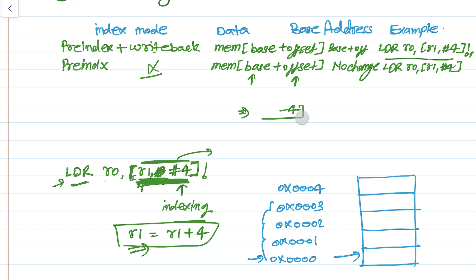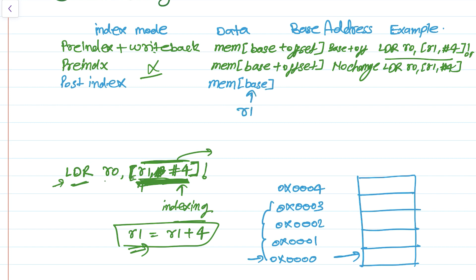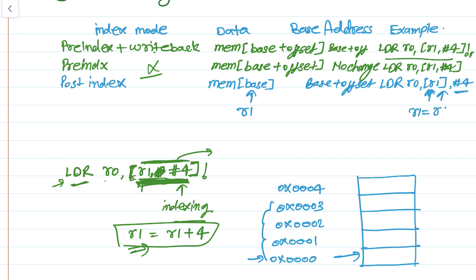Finally, we have post-indexing. In post-indexing, the data is loaded from the memory address pointed by the base register R1 with no offset, but the base address changes after the memory load. The base becomes base plus offset after loading. An example is: LDR R0, [R1], #4 — when the offset value is outside the square brackets, it indicates post-indexing. The CPU first loads data from the address pointed by R1, and after that automatically updates R1 to R1 plus 4.